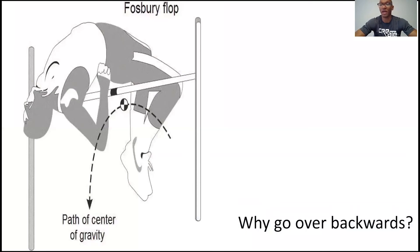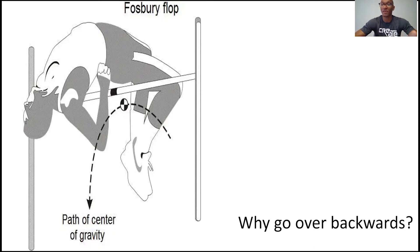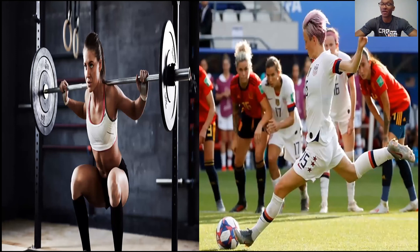The genius of the Fosbury flop is not that the athlete goes over backwards, but the fact that as the athlete soared over the bar, their center of gravity actually passed below it. When trying to get over an obstacle, you usually have to translate your center of gravity to a point at or higher than the obstacle. This is the case for every other high jump technique except the Fosbury flop. Thus, by using the Fosbury flop, Richard Fosbury was actually using less energy than his competitors, as he had to translate his center of gravity to a lower point.